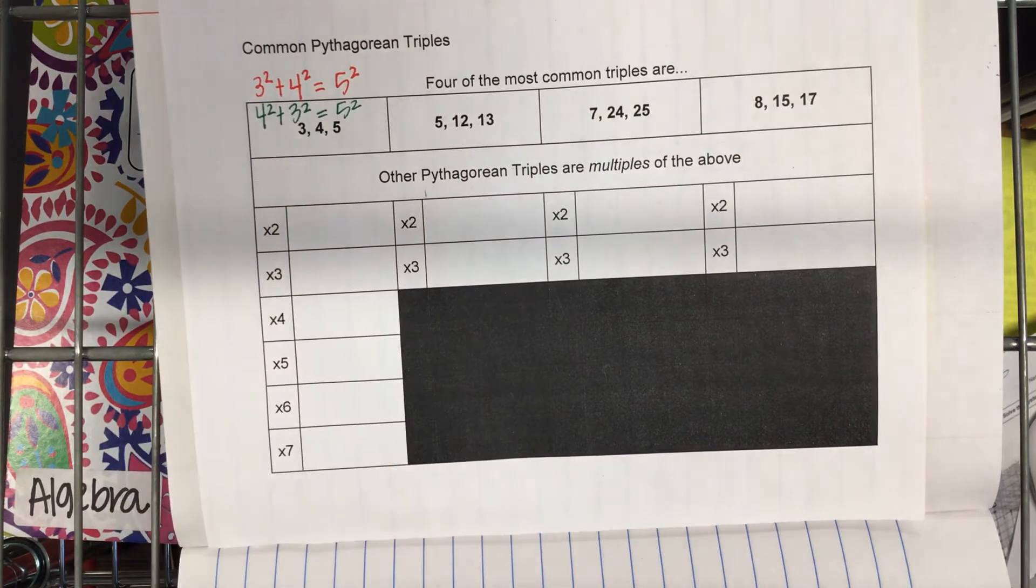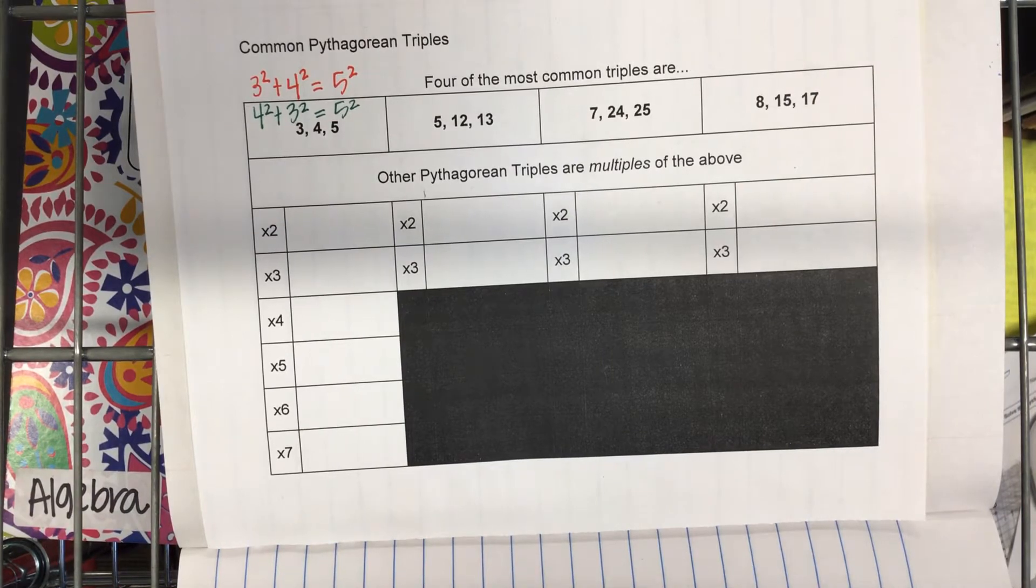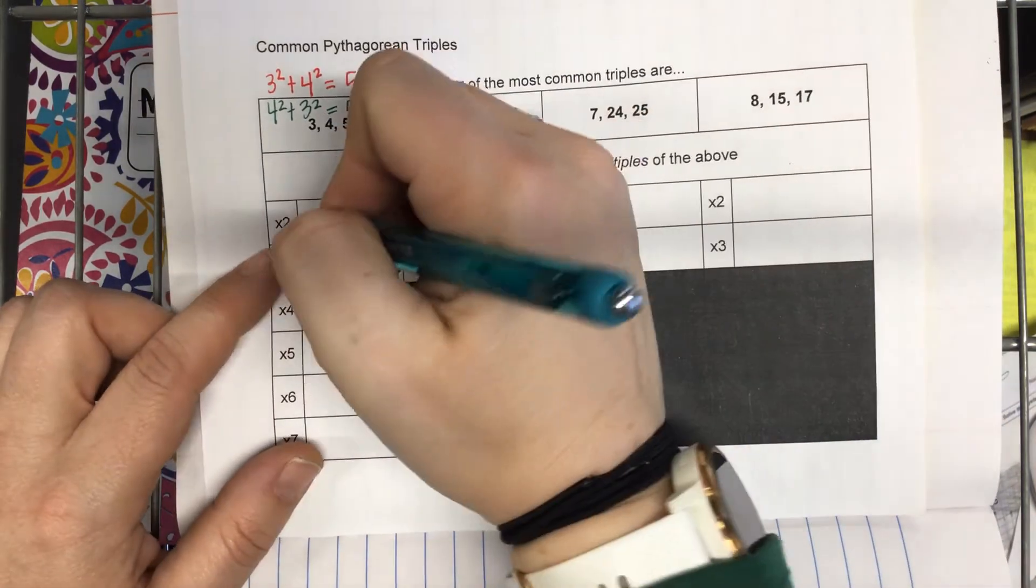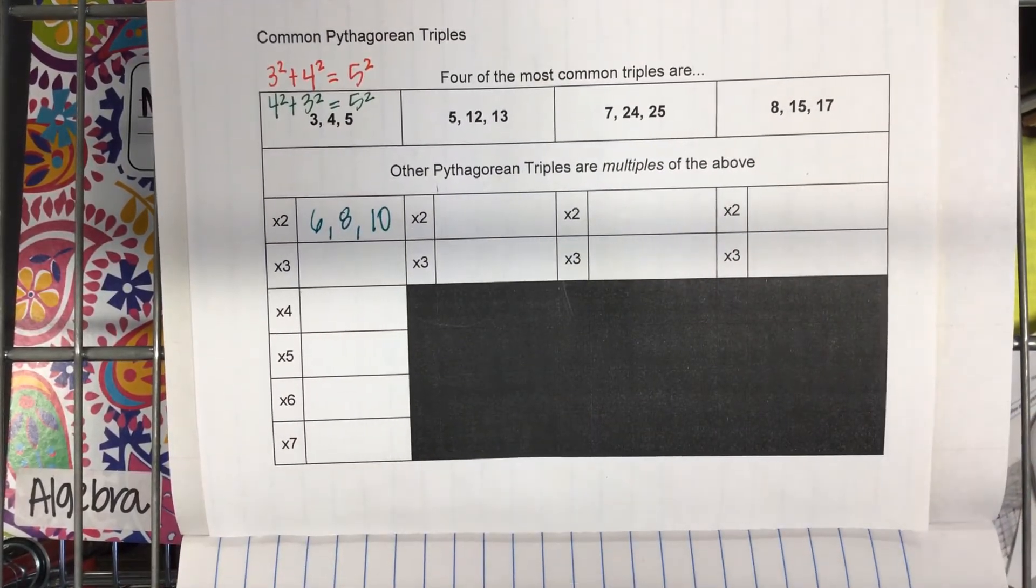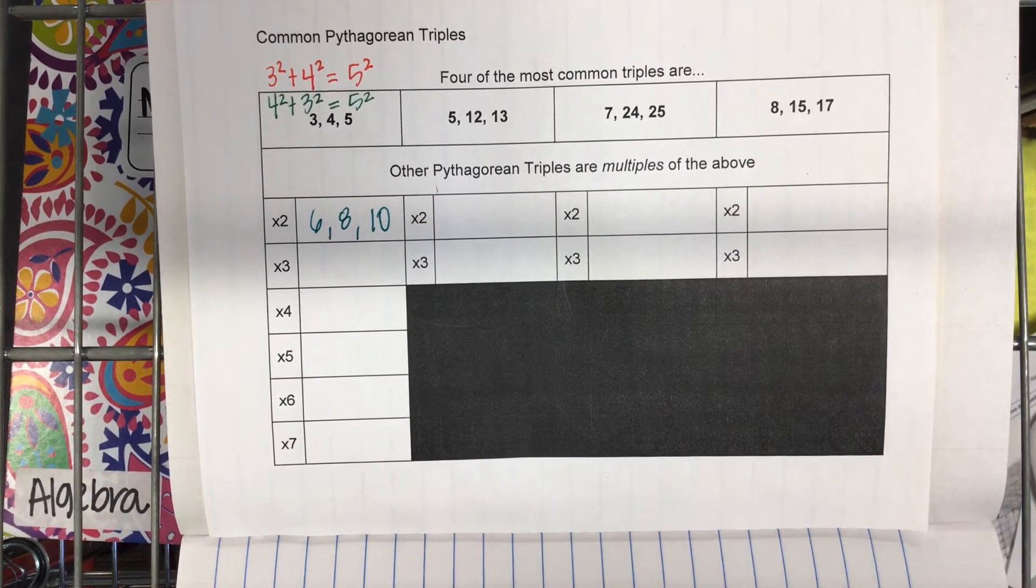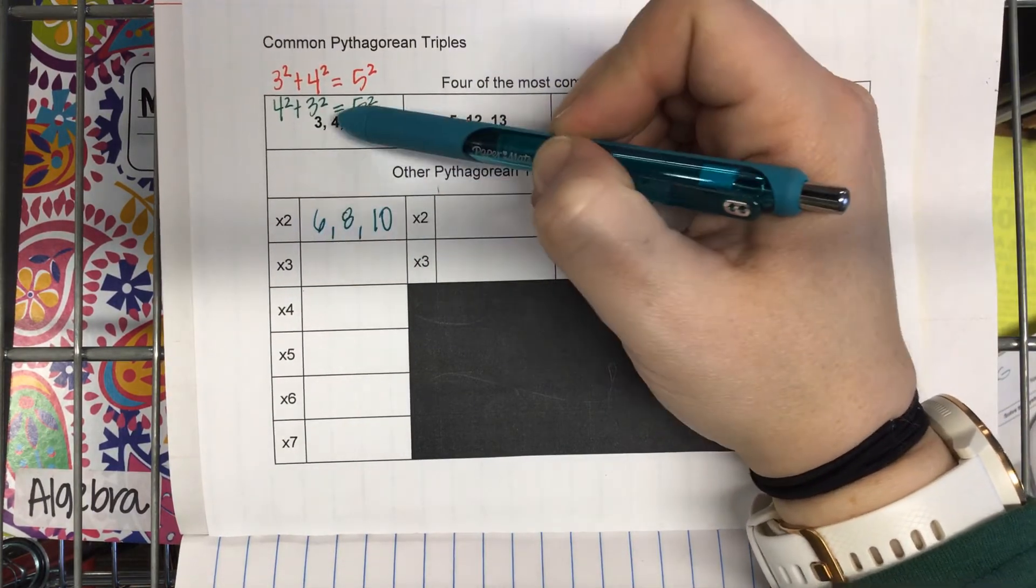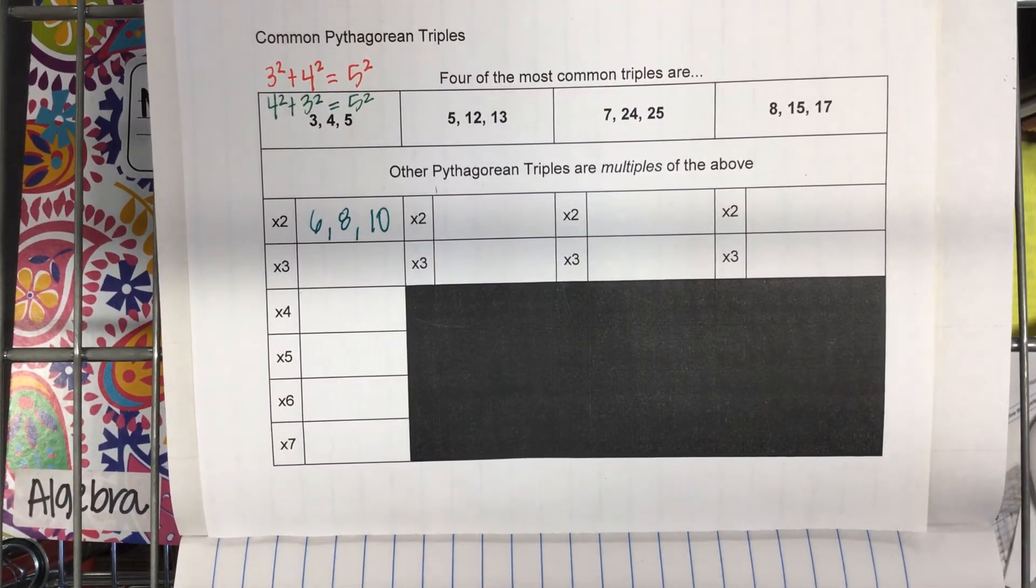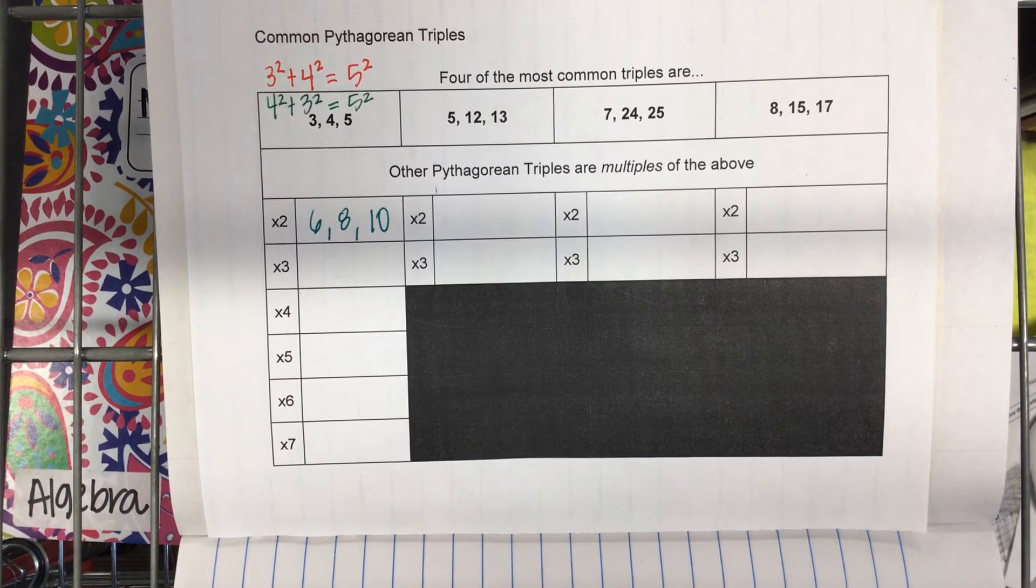If you can recognize the measurements three, four, five, you don't even have to do the math to know yes or no. Because three, four, five is always going to work. In fact, so does six, eight, ten. Do you know why six, eight, ten also works? Because what's three times two? What's four times two? What's five times two? So six, eight, ten works. Because if you divided it all by two, every single number, you do the same thing to it, you get a three, four, five. So it's like simplifying? It's like simplifying.